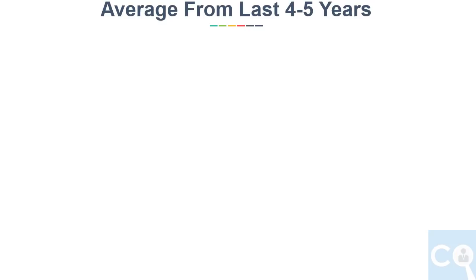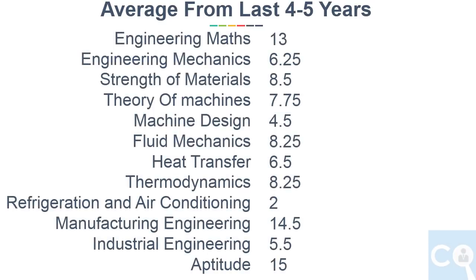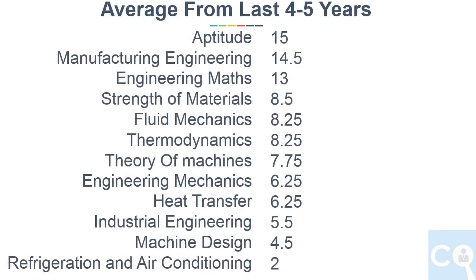For the sequence of subjects, we analyze the last 4 to 5 years of total average marks in each subject, including maths and aptitude, and arrange this from highest to lowest. This gives us the sequence of subjects. We will leave aptitude out of the fixed plan because you should practice aptitude daily based on your comfort level.